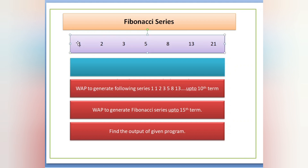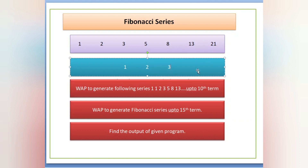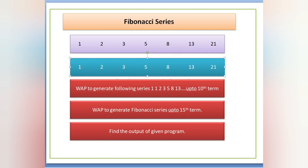Fibonacci series is a number series which follows these rules. First, the user takes any two numbers — here I am taking one and two. The next number is the addition of the last two numbers. So one plus two is three. Then three plus two is five, five plus three is eight, eight plus five is thirteen, thirteen plus eight is twenty-one. This continues depending upon the question.